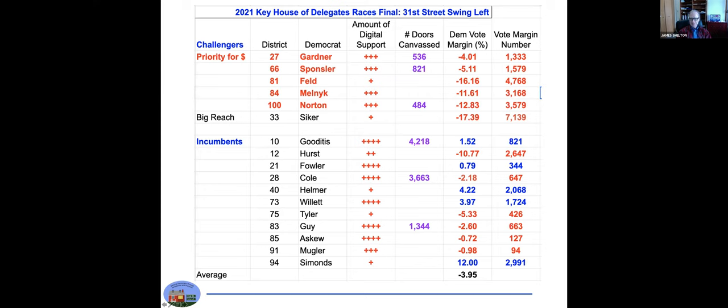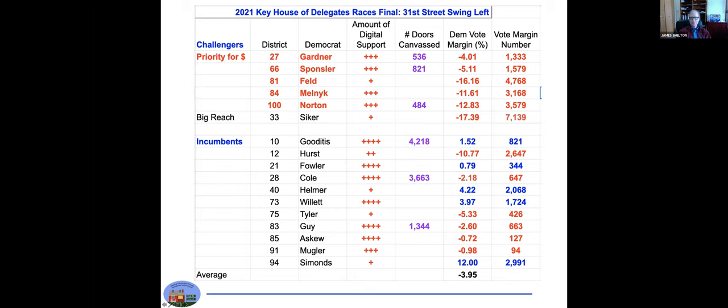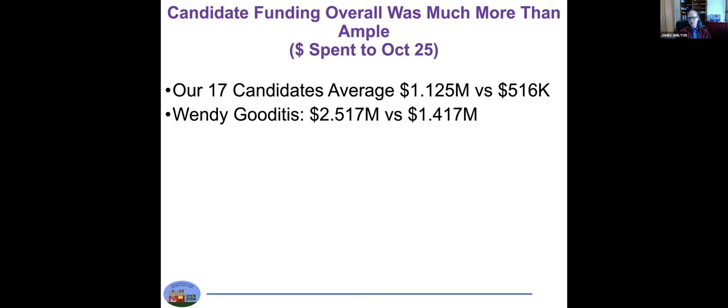Here's one of the key findings: candidate funding overall was much more than ample. Of the 17 candidates that we supported, they spent through October 25th over $1.1 million, over twice as much as their opponents. Huge amount of money for a House of Delegates campaign.